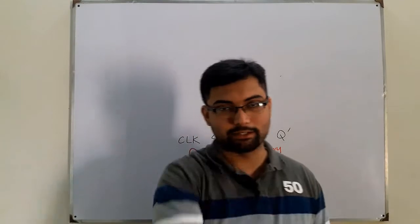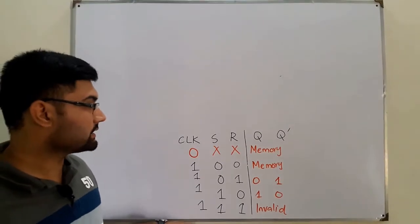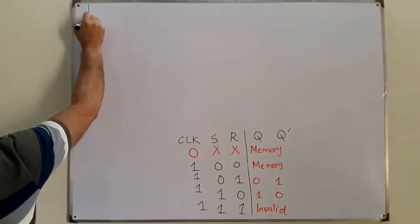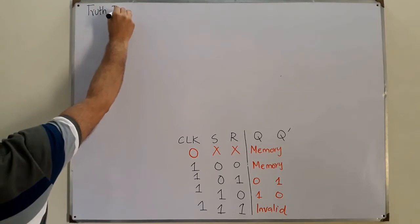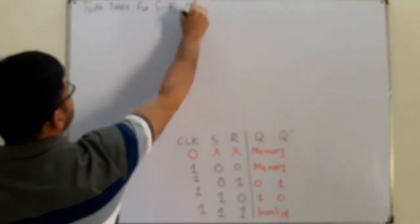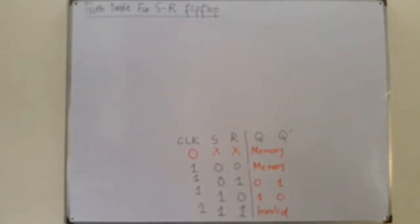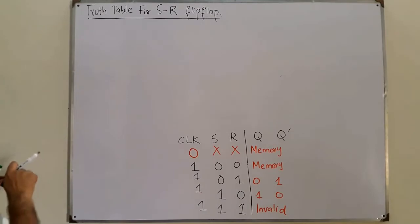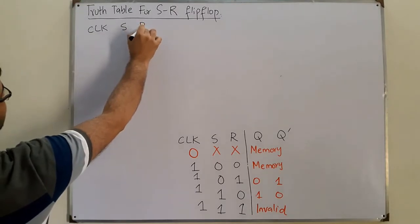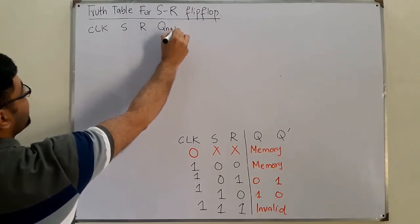Assalamu alaikum, continuing from the last video, this is where we ended - the truth table for the SR flip-flop. I can write it in another way. You need to understand this way. The inputs are the same: clock, S, and R. In the output, we make a difference - I represent the output as Q(n+1).